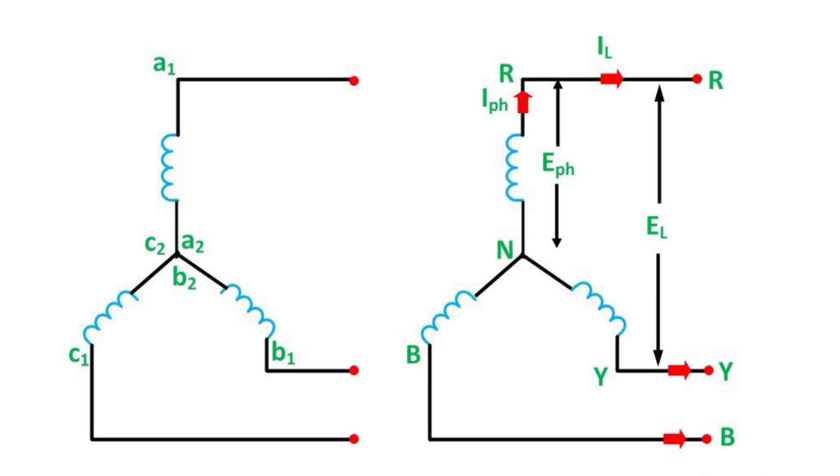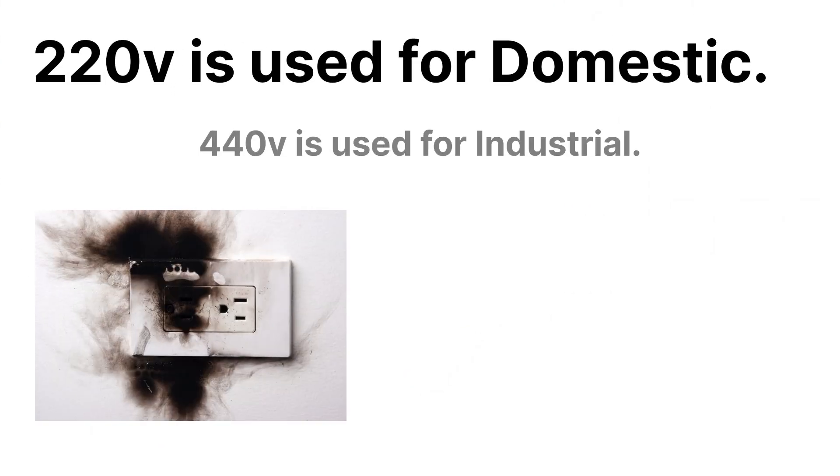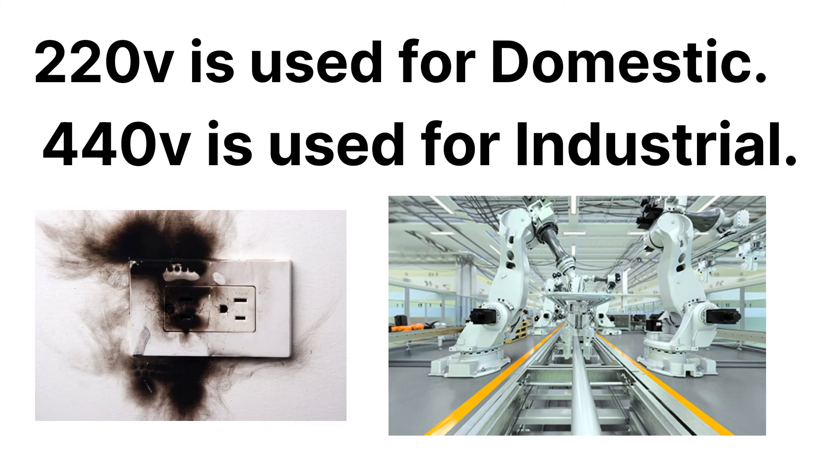If we measure the value of the voltage between any two phases of the transformer, that value will be approximately 440 volt. Generally, 220 volt is used for domestic purpose and 440 volt is used for industrial purpose.